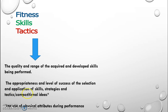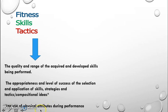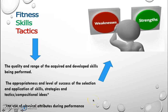According to the specification, you must look at the quality and range of acquired and development skills, recognise skills in the performance, and assess the appropriateness and level of success in the selection and application of skill. This covers strategies, tactics, or compositional ideas depending on your activity, plus physical attributes. For each of these areas you need to identify strengths and weaknesses within somebody's performance.